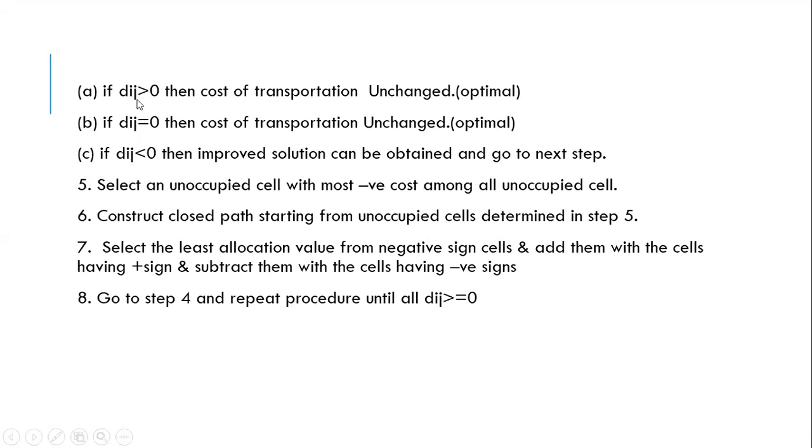What are those three conditions? The dij value can be greater than 0 or it will be equal to 0 or it can be less than 0. If it is greater than 0 or if it is equal to 0 it indicates that it is the optimal solution. We don't do anything.